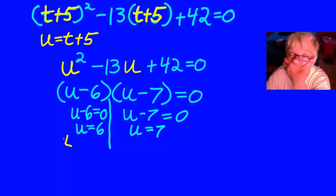Then, I re-substituted t plus 5 for u. Set that equal to the solutions. For instance, t plus 5 equals 6, so t equals 1. I subtracted 5 from both sides. t plus 5 equals 7, so t equals 2. Your solutions are t equals 1 and t equals 2.